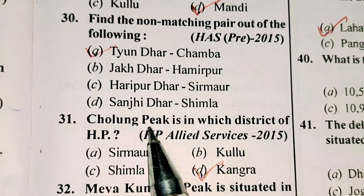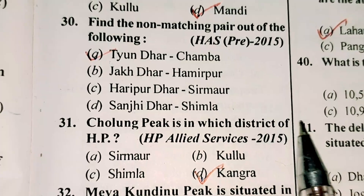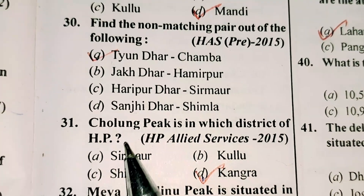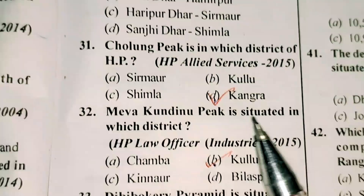Question number 31 is: Cholang Peak is in which district of Himachal Pradesh? Option D is correct.